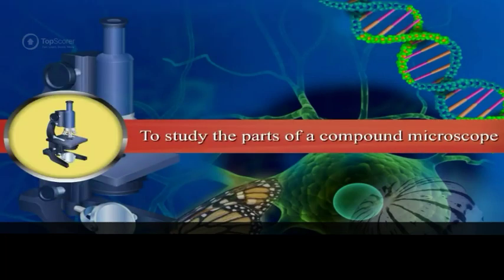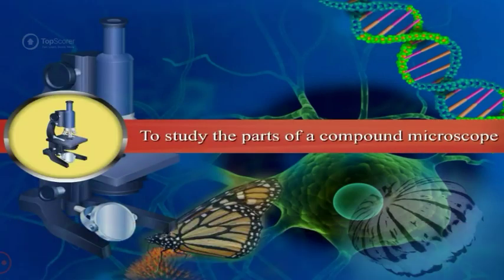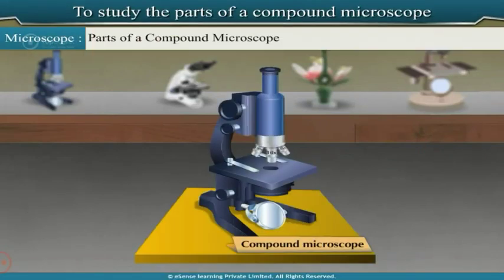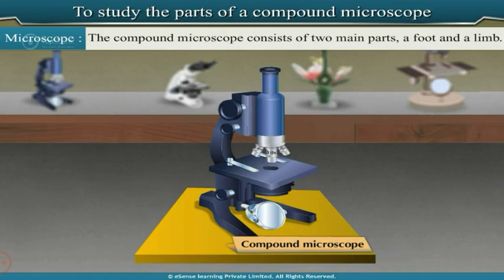To study the parts of a compound microscope. The compound microscope consists of two main parts: a foot and a limb.